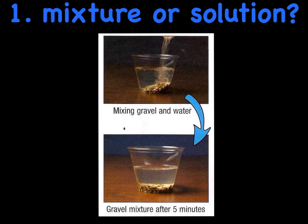Number one: is this just a mixture or is it also a solution? If it's just a mixture, write 'mixture'; if it's a solution, write 'solution.' We have an example of mixing gravel and water, and five minutes later we have a gravel mixture. So would that be just a mixture or also a solution? Put your answer on the line — spelling counts.